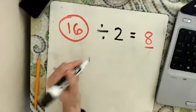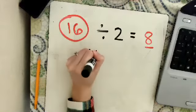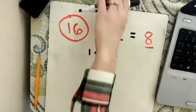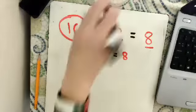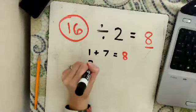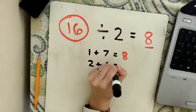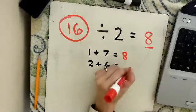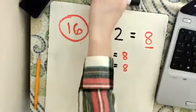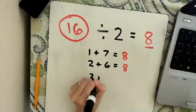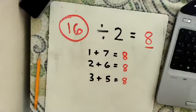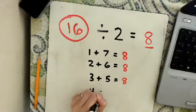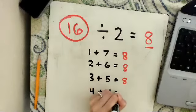So numbers that add up to 8. We could do 1 plus 7, that equals 8. We could also do 2 plus 6, that equals 8. 3 plus 5 equals 8. And can you think of one more set of numbers that adds up to 8? 4 plus 4 equals 8.